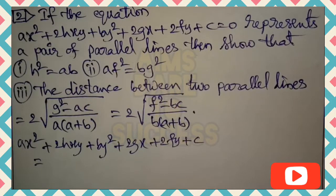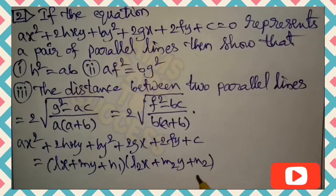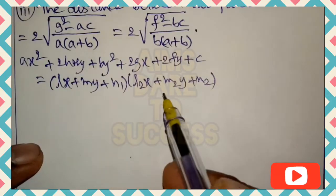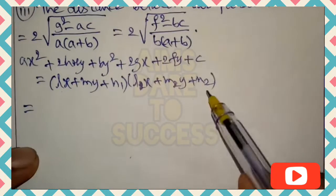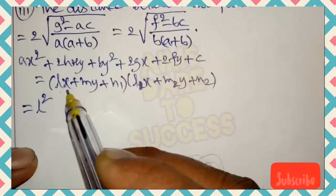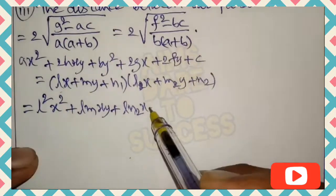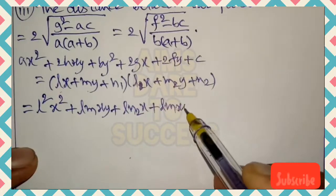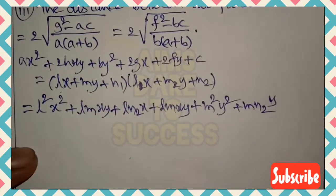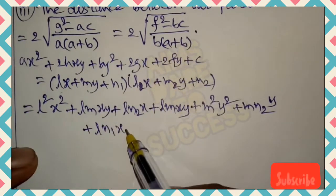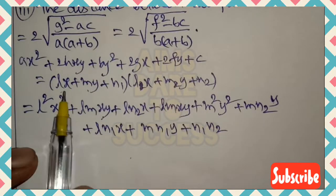According to the question, I want to explain in an easy method, so listen carefully — success will come to you automatically. The given line ax² + 2hxy + by² + 2gx + 2fy + c = 0 represents parallel lines, which we write as (lx + my + n₁)(lx + my + n₂). Note that both brackets have lx + my, since parallel lines share the same l and m coefficients.